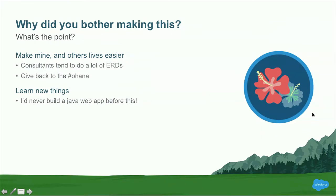So why did I even bother building this tool? What's the point of all of this? Mostly to make mine and other people's lives easier. Consultants tend to do a lot of entity relationship diagrams, especially in discovery and pre-sales, so having a quick way to generate them is very important. It's also a good way to give back to the Ohana — building tools like this and providing them free for other people to use is a brilliant way to give back. And it's a good excuse to learn some new things; before I built SchemaPuker, I'd never built a Java web app before.